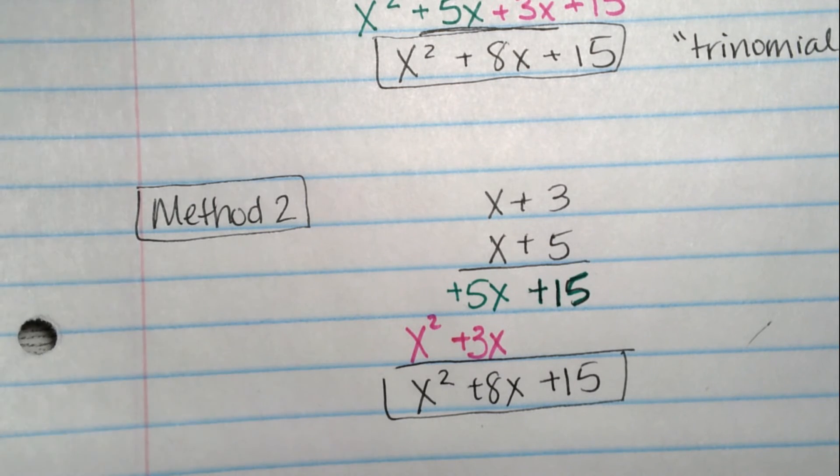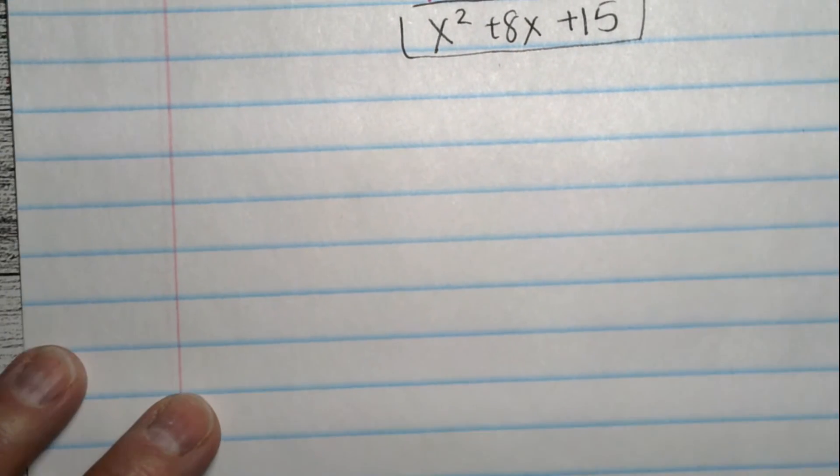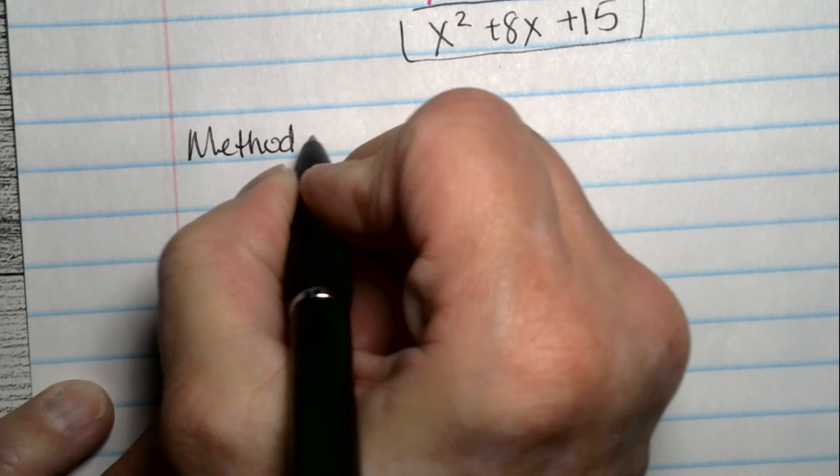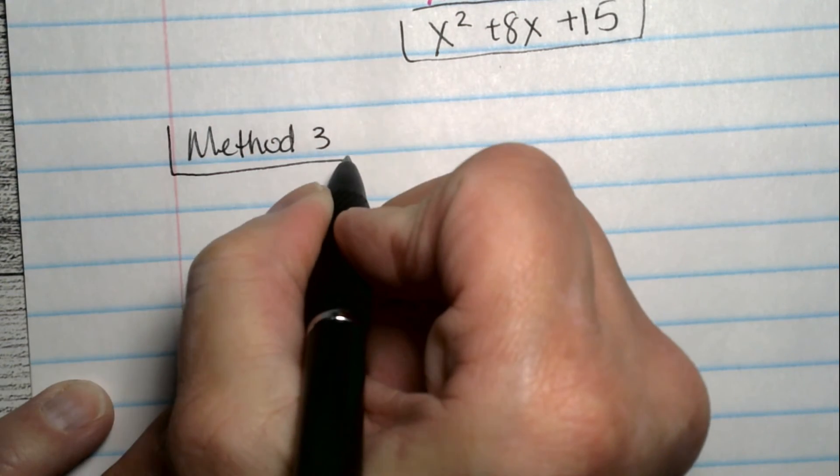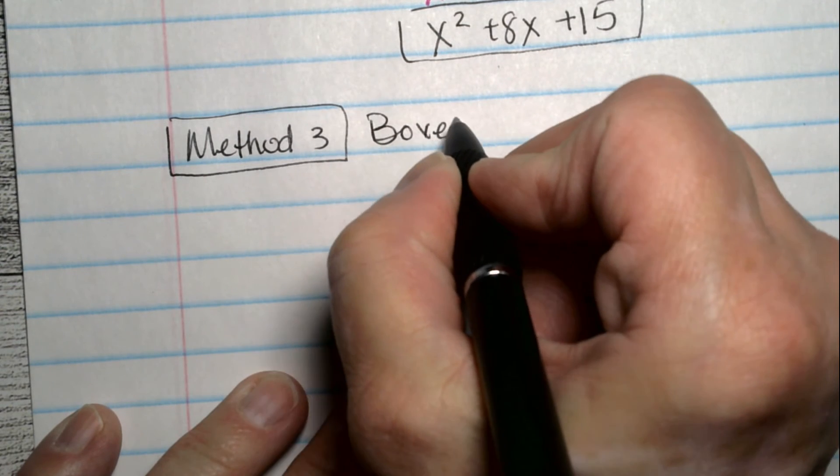The third method is a little bit more common in math classes. Method 3. And that's using a box. Using boxes. Boxes.